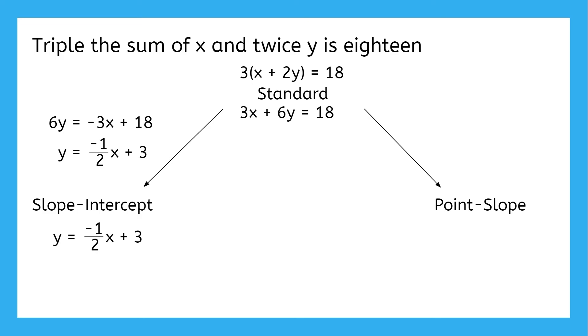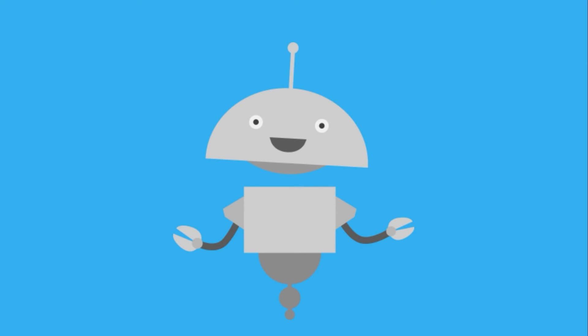For the point-slope version, we can use the information we just found: that the slope is negative one-half and that the y-intercept of three gives us a point to use. If we use those in point-slope form, we get the equation y minus three equals negative one-half times x minus zero. Changing between the three forms is easy once you understand how they're related to each other.